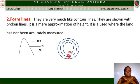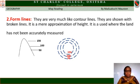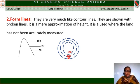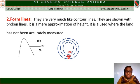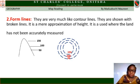Form lines. These are very much like contour lines but are shown with broken lines. They are a mere approximation of heights, used where the land has not been accurately measured. A surveyor may want to survey an area but has not yet measured it precisely — being a specialist, he can make an approximation of the height. But when the land is actually measured and the exact measurement obtained, the line will be joined straight. The broken lines indicate that this is not an exact measurement.